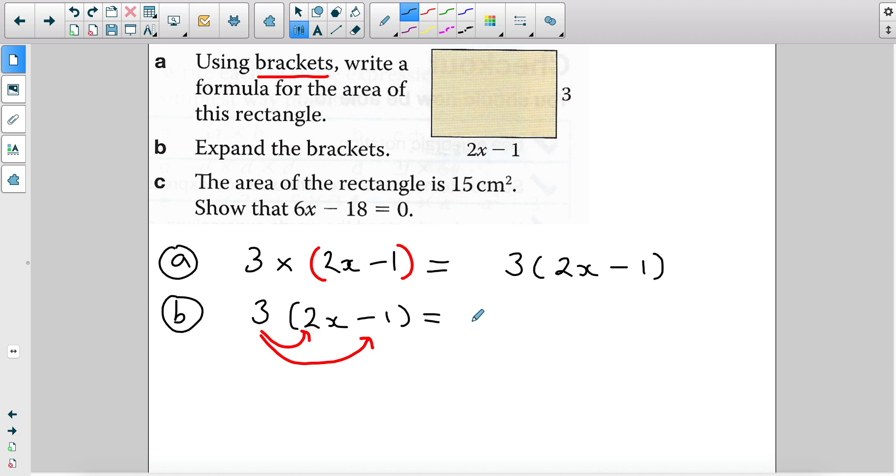So 3 times 2x, we multiply the coefficients. So 3 times 2, that's 6. The x is not being multiplied by anything else, so it stays as it is. 3 multiplied by negative 1 is negative 3. So we've expanded the brackets.